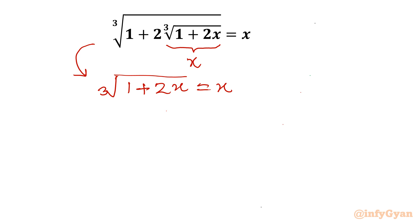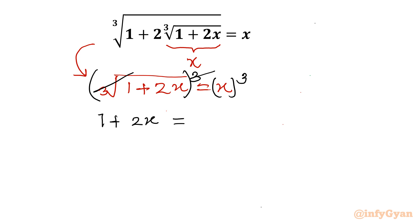Now I will cube both sides. This cube and cube root will cancel. So I will write 1 plus 2x equal to x cubed. Taking all terms to the RHS gives us x cubed minus 2x minus 1 equal to 0.